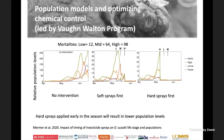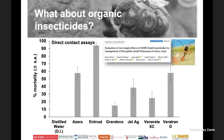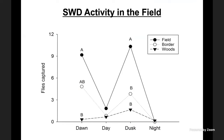All insecticides — including organic products — have harmful effects on beneficial insects, so we need to keep that in mind. One way to minimize non-target effects is to spray during dawn and dusk when SWD flies are most active in the field, so flies are directly exposed to the spray. Spraying at other times relies only on residue exposure, which may be less effective. An added benefit is that fewer beneficial insects are active during dawn and dusk.